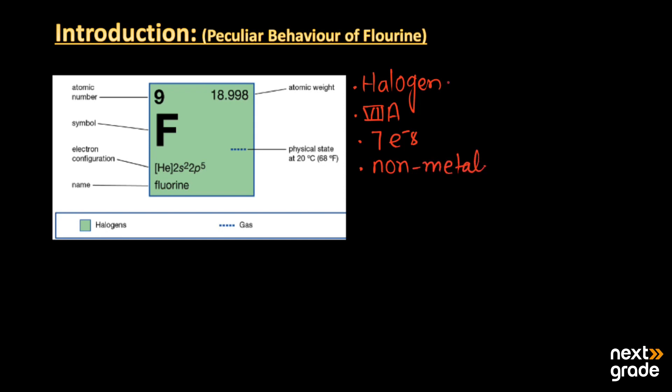The halogens contain fluorine F2, chlorine, bromine, and iodine, in which fluorine is the first member of the halogen. It has some different characteristics, and these behaviors or characteristics are known as its peculiar behavior of fluorine.